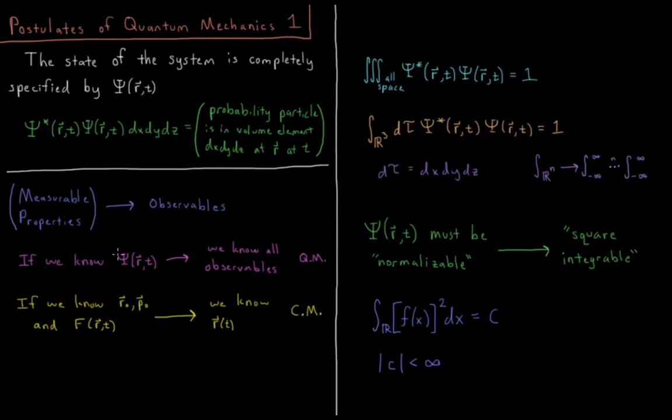So if we know the wave function as a function of space and as a function of time, then we know all observables of the function in quantum mechanics. Anything that you can observe in classical mechanics, any measurable property, is known exactly if you have the exact wave function of the system as a function of space and time.